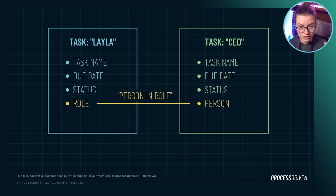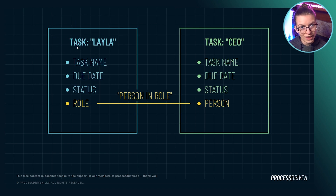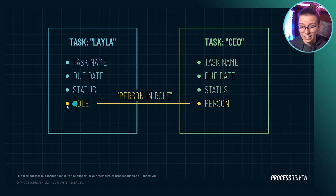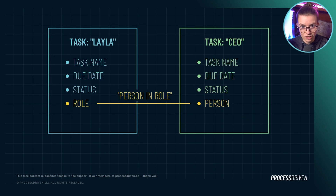That's where relationships — the feature that ClickUp now has — is really powerful. Rather than having this limited situation, we can instead make two separate tasks and connect them together: that is the relationship. Task number one would be Layla, and rather than a dropdown custom field, we would build a link, a bridge, to another list of tasks — in this case, our list of roles. Of those roles, we'd have a task called CEO and relate those two things together. On the task side you'd see the role, and on the CEO side you'd see the person in the role. That overall relationship — that link — the name of that bridge is "person in role," and that bridge itself is our relationship.